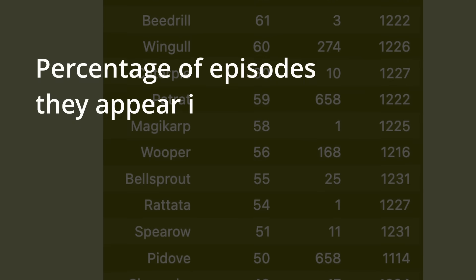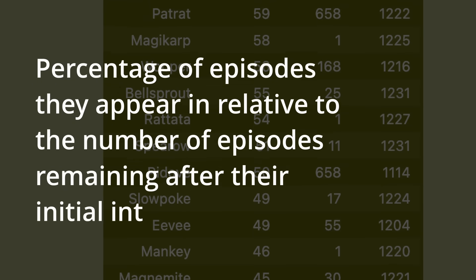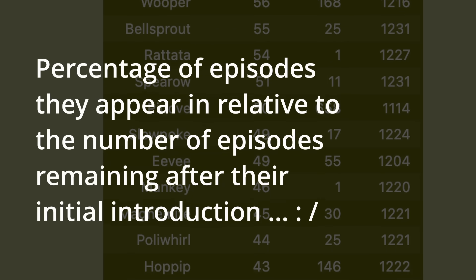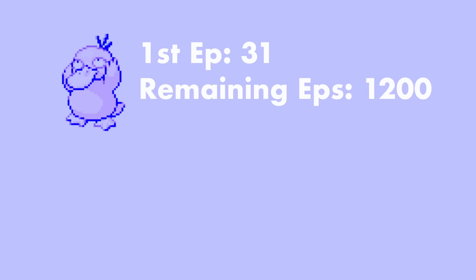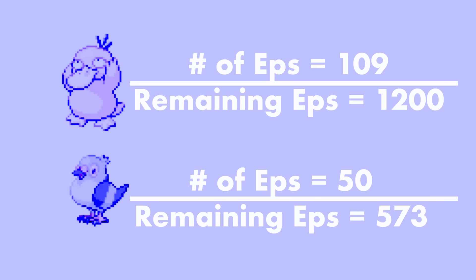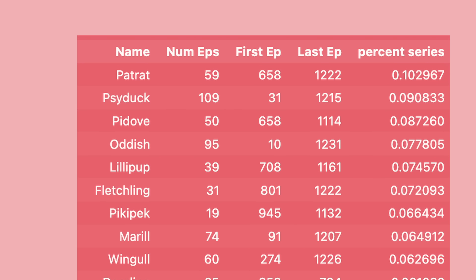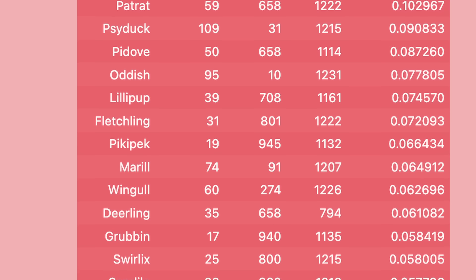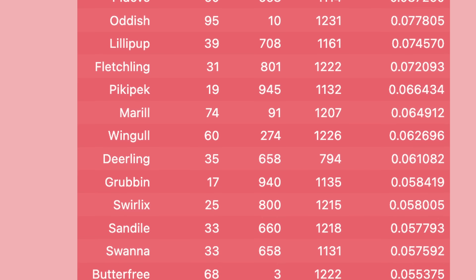But what if we look at the percentage of episodes they appear in relative to the number of episodes remaining after their initial introduction? For example, Psyduck has 1,200 episodes that they could potentially appear in after their initial introduction, while Pidove shows up in episode 658, meaning there are only 573 episodes that they could appear in. So just take the total number of appearances and divide by the possible number of appearances. Now, this actually has the opposite problem in that it will bias towards Pokemon that appear right at the end of the series, but if we again specify that we only want those that appear 10 or more times, we get this table. I think this gives us a better look at how the preferences of the producers change as the series continues. And despite Patrat coming out on top, it is clear that the producers do actually really seem to like Psyduck, and Oddish quite a lot.